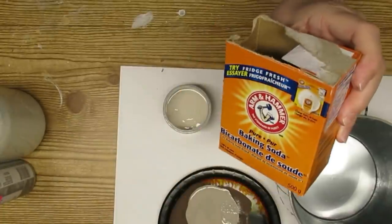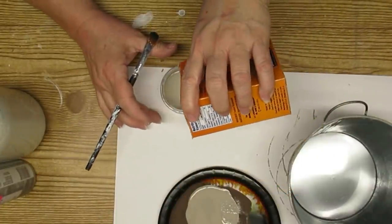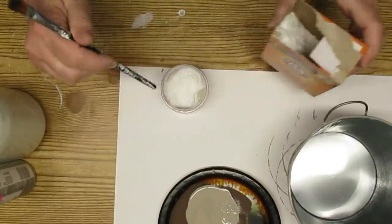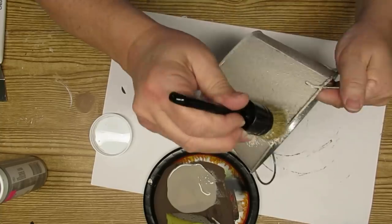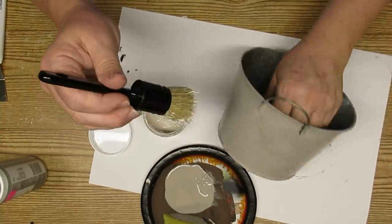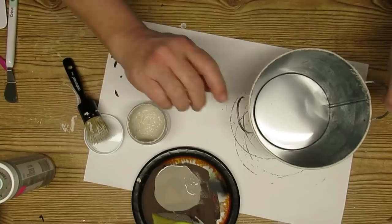Then using just some regular latex paint in a lighter shade and some baking soda, I'm going to mix this together and then use the same kitchen sponge to pounce it on again. This is going to give me some wonderful texture that's almost going to look like stucco.